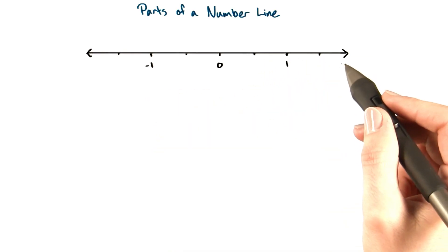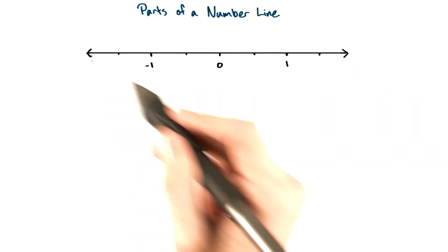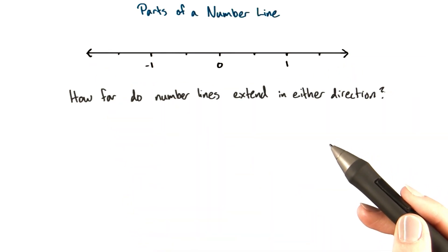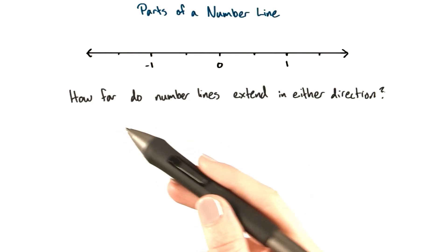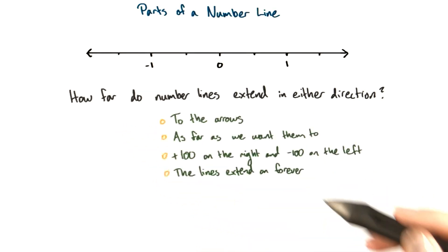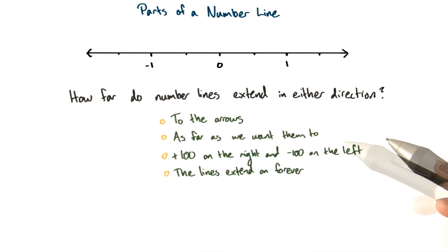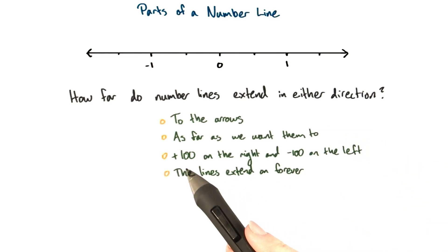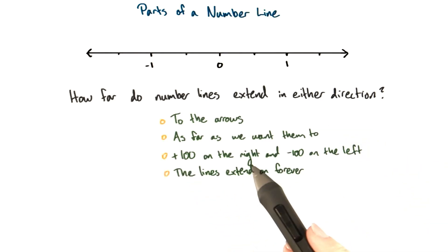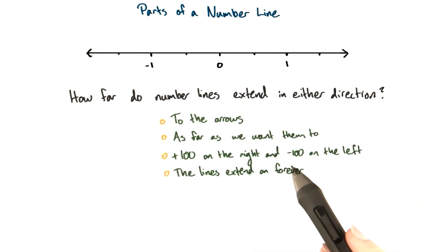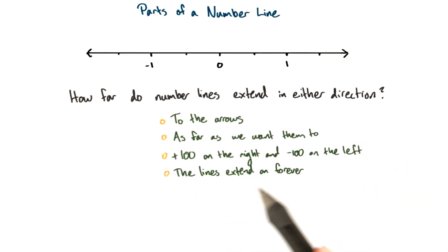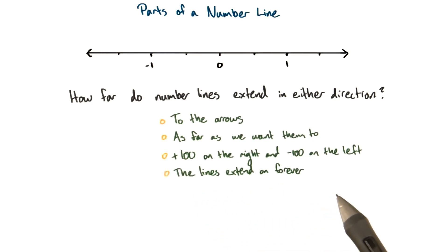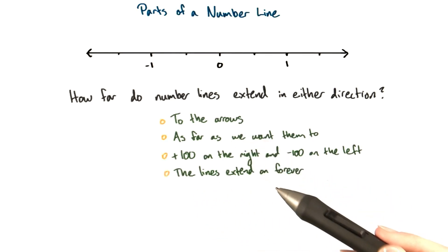But what do the arrows at the ends mean? How far do you think these number lines extend on either end? Do they extend to the arrows, as far as we want them to — to positive 100 on the right and negative 100 on the left — or do they extend on forever? Please select 1.